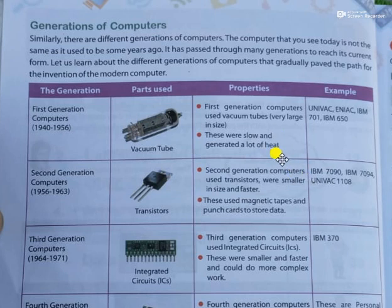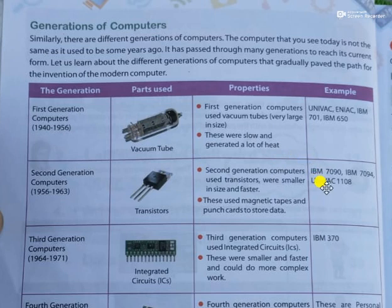Second generation computers were a little bit faster than the first, lighter in size, and smaller in size — so all three things were improved. Examples of second generation computers are IBM 7090, IBM 7094, and UNIVAC 1108.